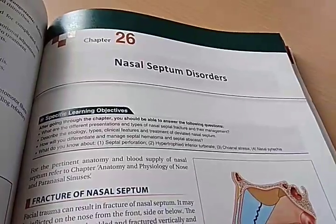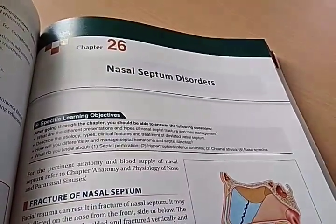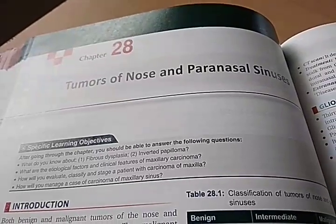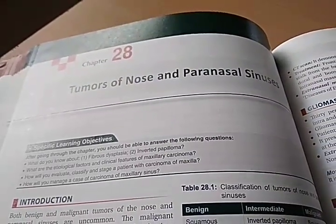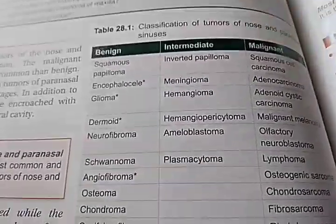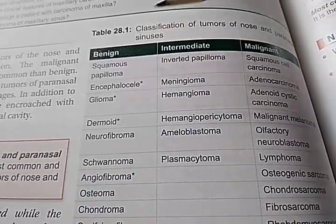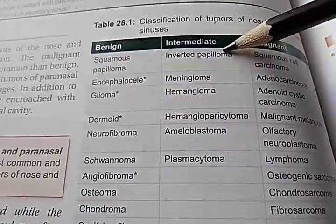Chapter 26 is on nasal septum disorders. Then tumors of the nose and paranasal sinuses — look at this, you can have benign and malignant, and they have put an intermediate category in the middle. For benign, we need to know which one — angiofibroma. What does the star indicate?